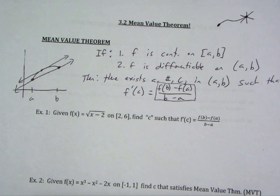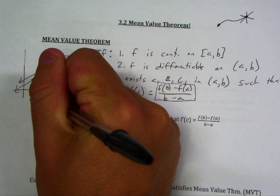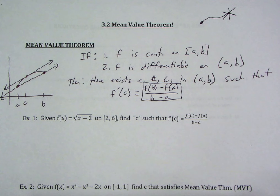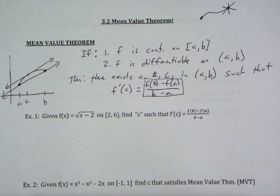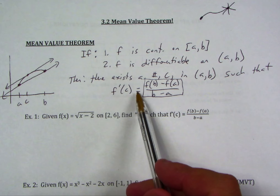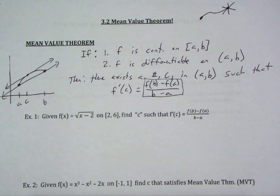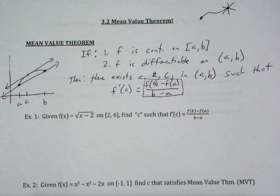A secant line connects the endpoints. The theorem is saying there's going to be some point on this function where the instantaneous rate of change equals the average rate of change — or in other words, there's going to be some point where the tangent line is parallel to the secant line. That C value would be right there. This is an existence theorem, just like the intermediate value theorem. It doesn't find the value for you; it just tells you it's going to happen.